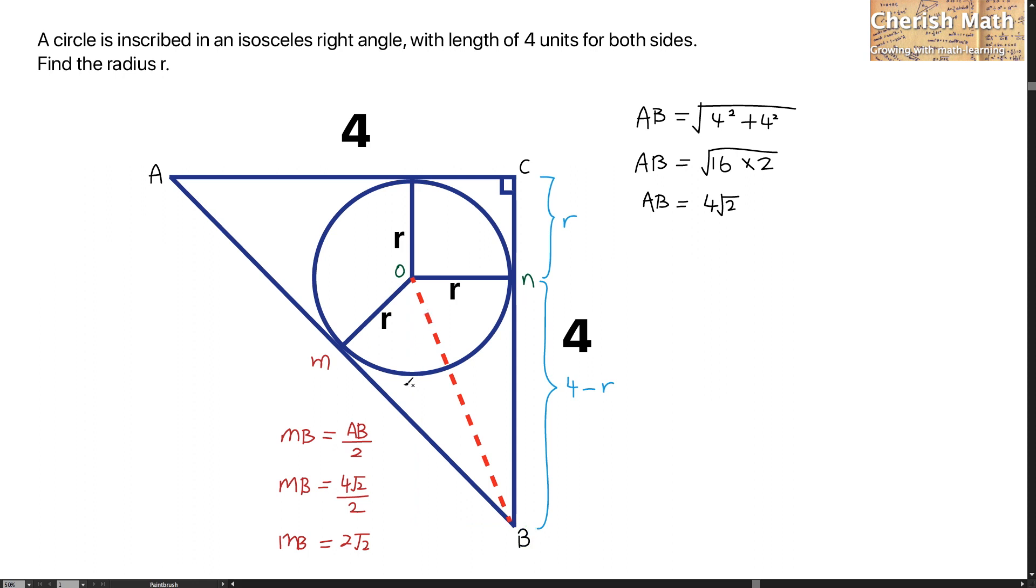Triangle OMB and triangle ONB are congruent to each other. So the side length MB is the same as the side length NB. Therefore, MB equals NB.